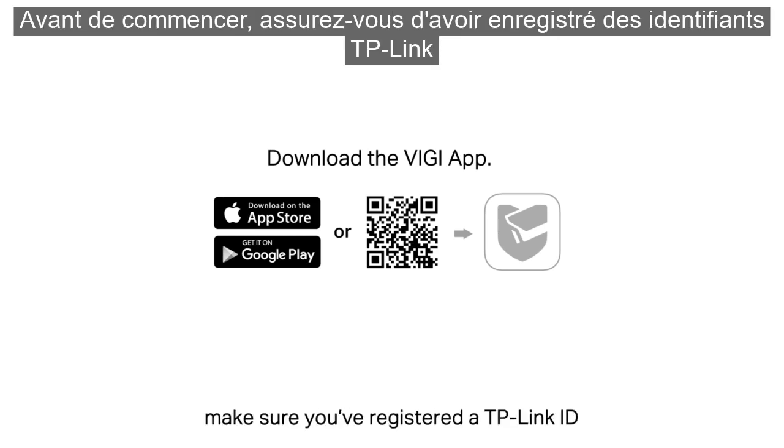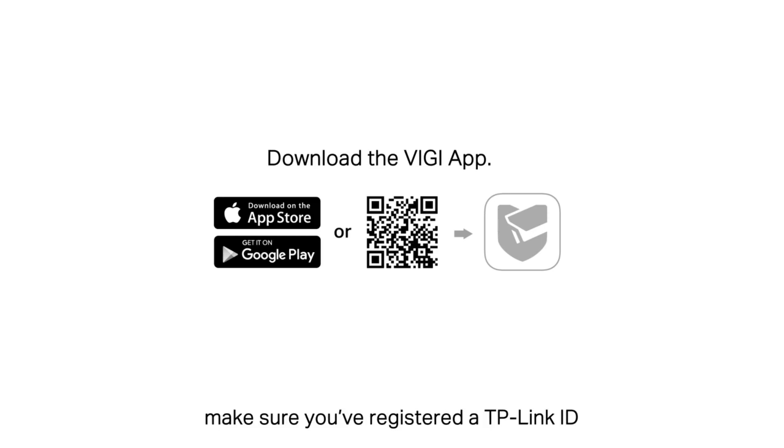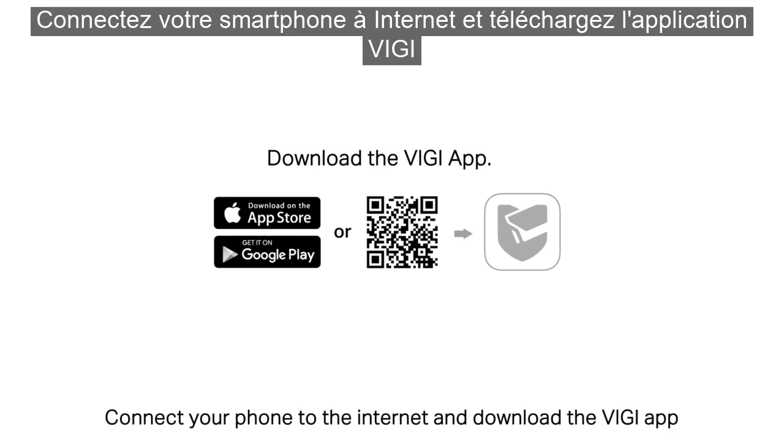Before you start, make sure you've registered a TP-Link ID. Connect your phone to the internet and download the Vigi app.